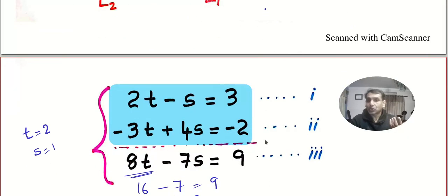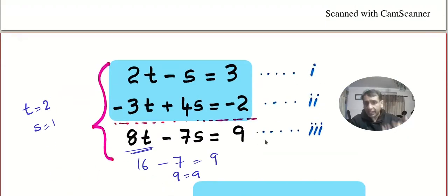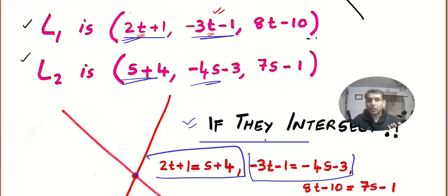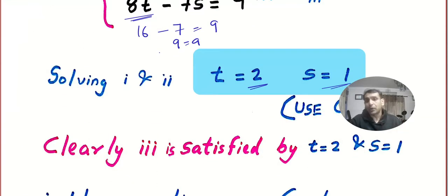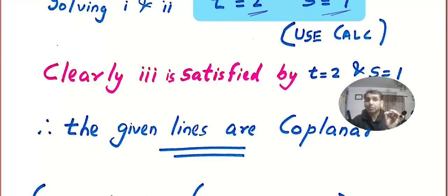Now it's so simple. Either you put t equal to 2 in the parametric form, so it will be 2 into 2 plus 1, or you put s equal to 1 here. You will get the common point. So very simple.